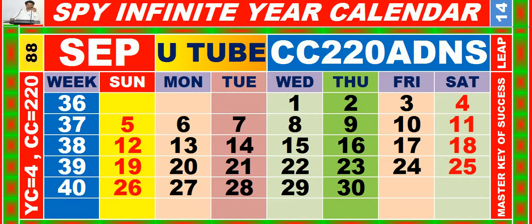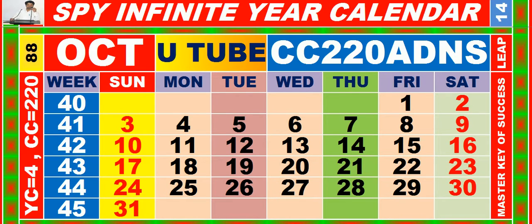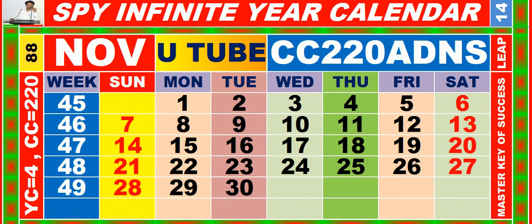Calendar for the month of September, having calendar code equal to 220. Calendar for the month of October, having calendar code equal to 220. Calendar for the month of November, having calendar code equal to 220.